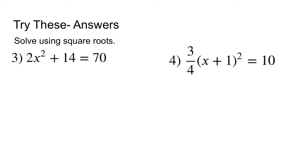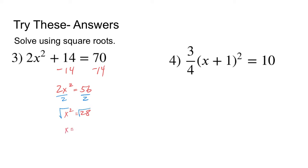We have work to do with numbers 3 and 4. For number 3: subtract 14 from both sides to get 2x squared equals 56. Divide both sides by 2 to get x squared equals 28. Take the square root of both sides — x equals plus or minus the square root of 28. Simplifying the square root of 28 gives 2 square roots of 7. That's the answer to number 3.